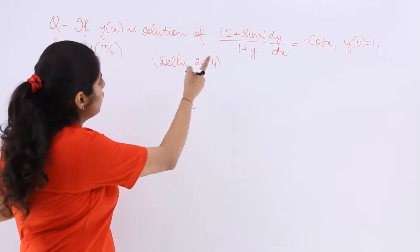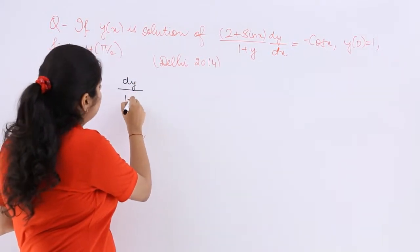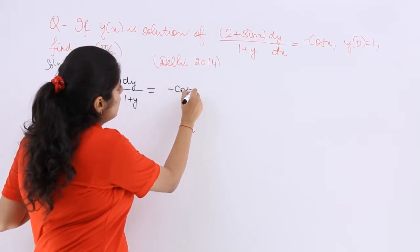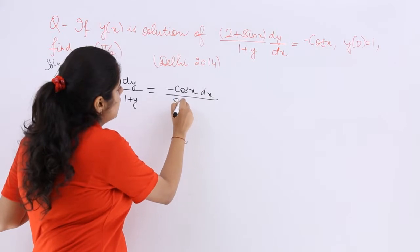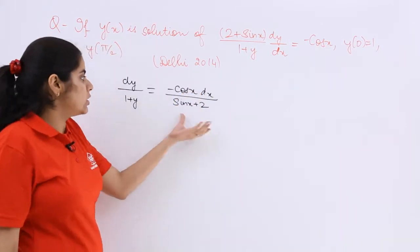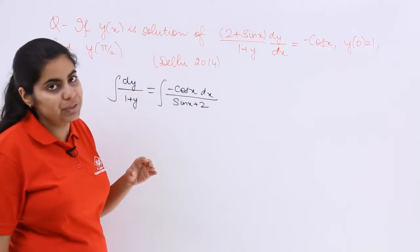So I do the same methodology as the previous question. I write dy upon 1 plus y is equal to minus cos x dx upon sin x plus 2. And when x's are together, y's are together, the solution becomes simple when you integrate both the sides.